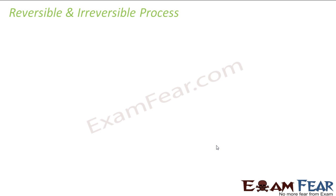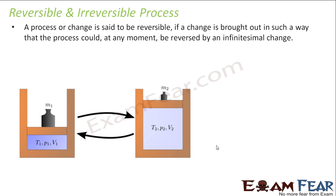Now let's talk about reversible and irreversible processes. A process which can be reversed is called a reversible process, and a process which cannot be reversed is the irreversible process. A reversible process can be reversed at any point in time. An irreversible process cannot — for example, if you burn wood, you get carbon dioxide and heat.